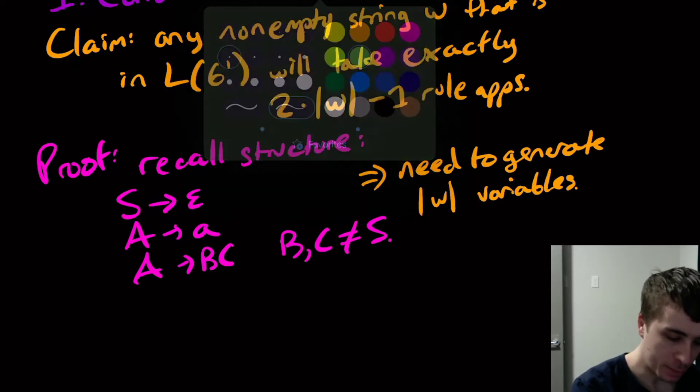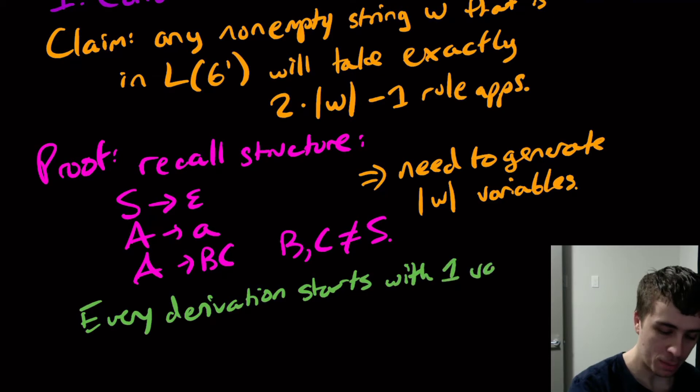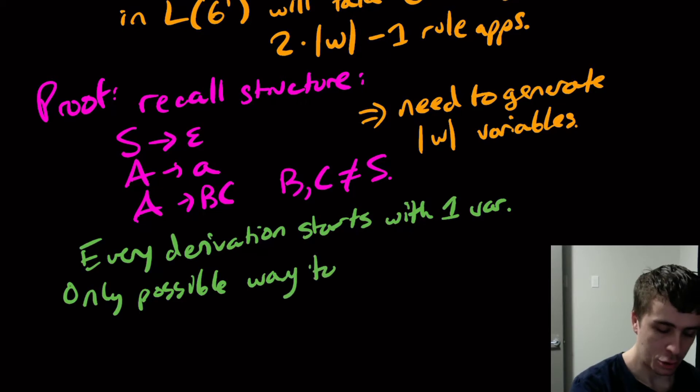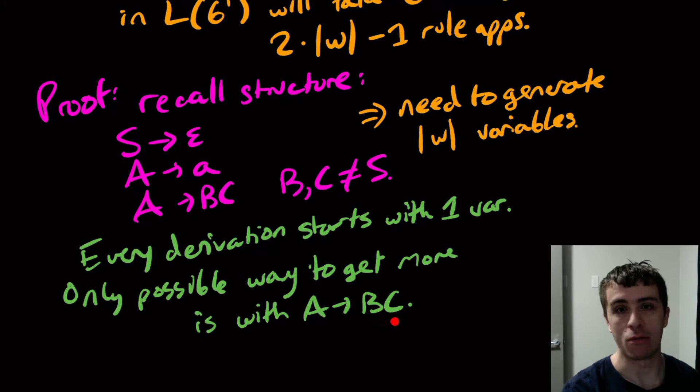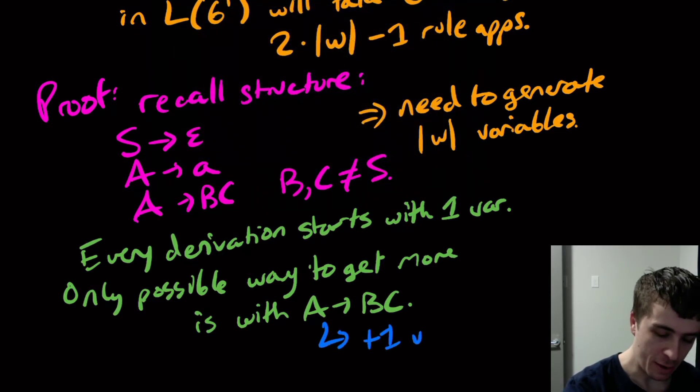And every derivation starts with one variable, namely the start variable. And the only possible way to get more variables is with A goes to BC, or rules of that form. And note what happens here, we have one variable that gets replaced, and we replace it with two. So every time we use one of these, we will gain one variable exactly. So yeah, so I should write that down. This will give us plus one variables total.